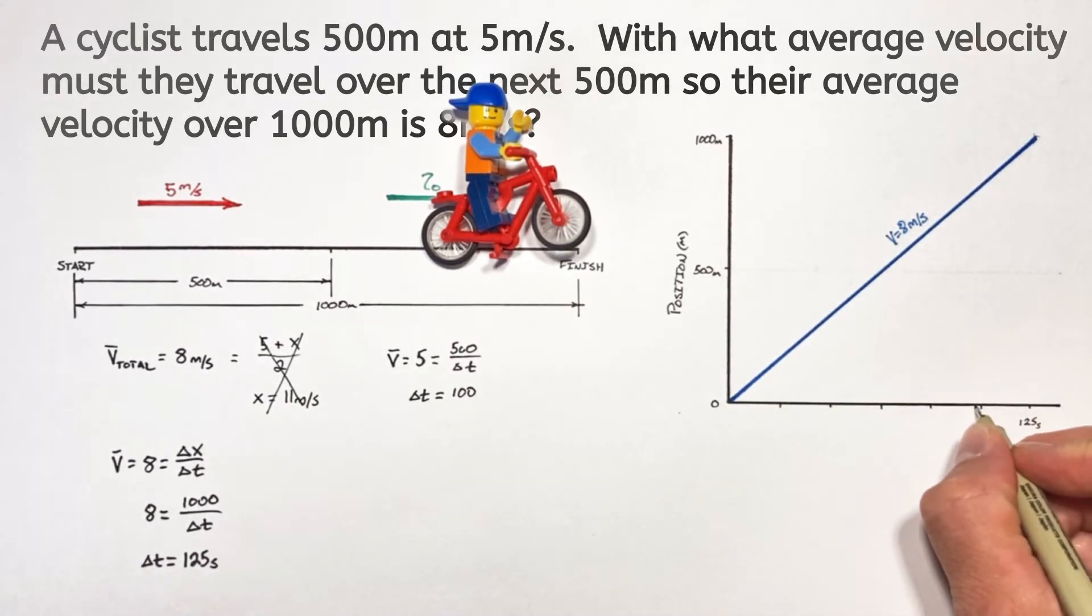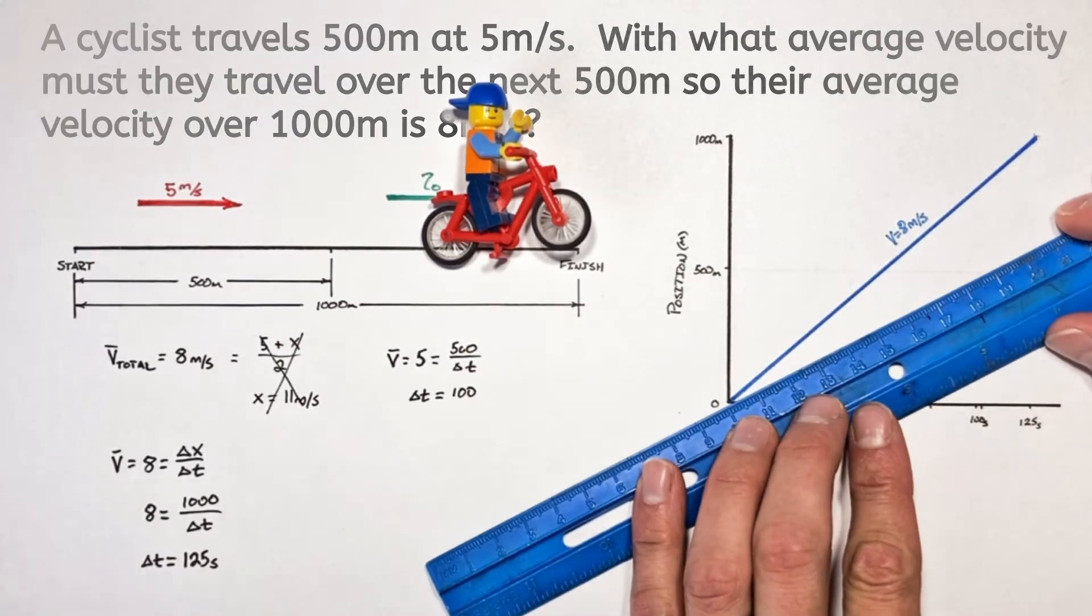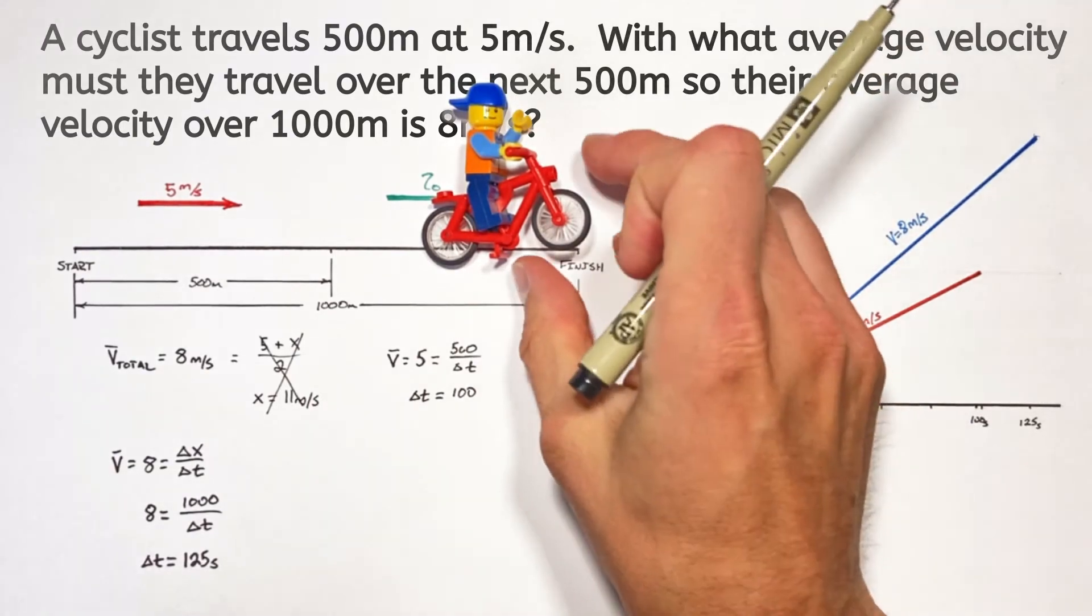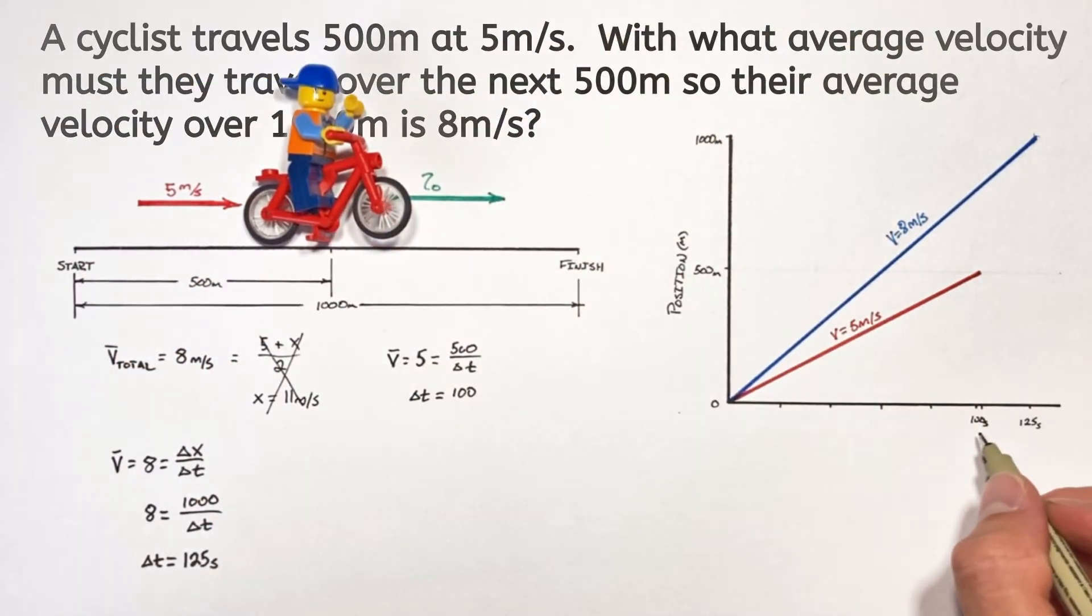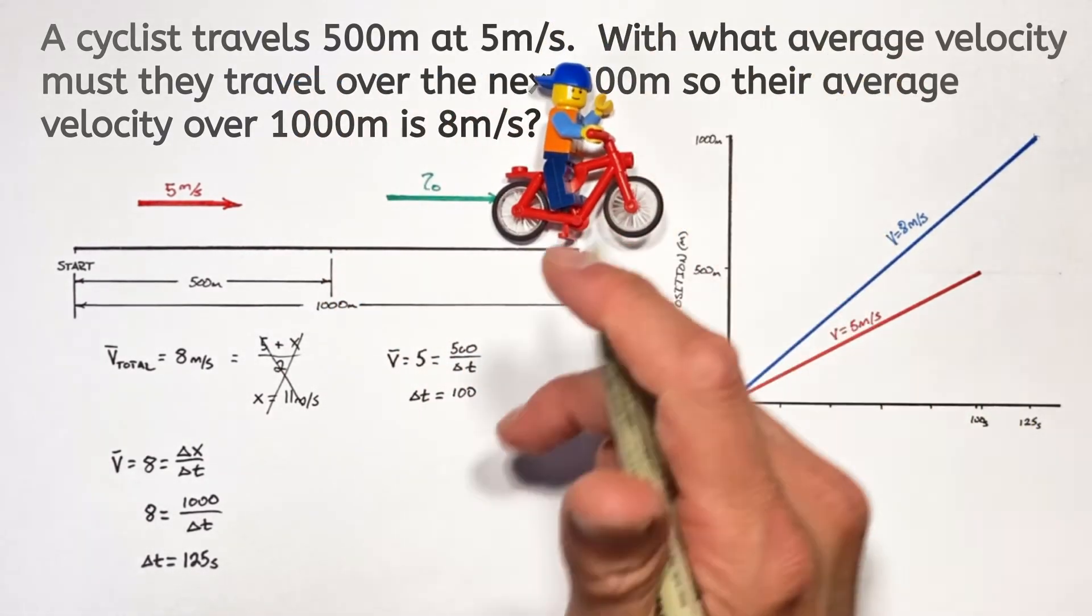So looking on our graph, 100 seconds sits right about here, because I didn't count out the divisions right before I did this problem. But we'll see it takes these 100 seconds to get to 500 meters. And this is where we start to see the issue here. So if the first 500 meters take up 100 seconds, that's going to leave our little dude with only 25 seconds to go the next 500 meters.